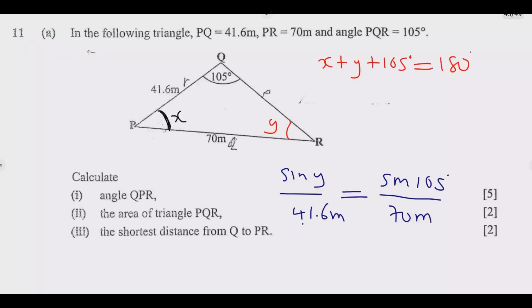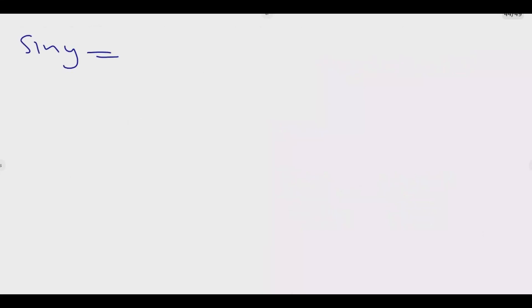The sine rule states that the ratio of a given angle to its opposite side is the same for all three angles and corresponding sides. So sine Y over 41.6 meters must equal sine 105 degrees over 70 meters. Then you can solve for Y.